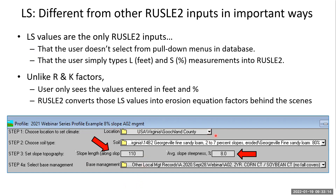For location, you have menus of different counties with climate data already loaded; for soil, the same; for management, you build managements using components already in the database. But for slope length and steepness, you type in the numbers yourself, giving you a great deal of flexibility. Unlike the R factor and K factor, you never see the actual LS factor values that go into the erosion equation — that all happens behind the scenes. You only see the length and steepness, which get fed into the computation as a black box.